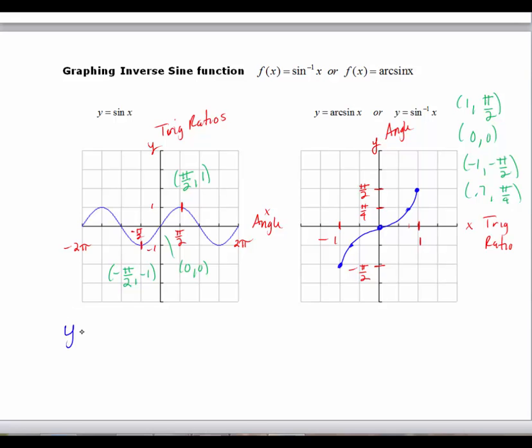If I start off with y equals sine x, remember, in order to come up with an inverse, we interchange the x's and the y's. So we now say x is equal to sine y. So y is now the angle. Well, x is the trig ratio where before y was the trig ratio and x was the angle. But this is not explicit. This is what we call an implicit function. We want to write some expression y is equal to.